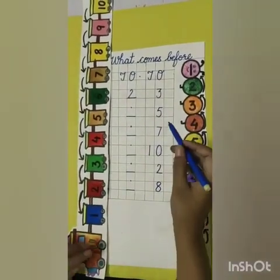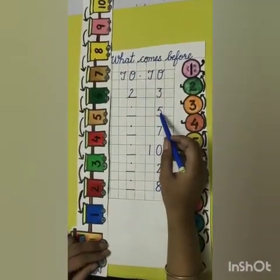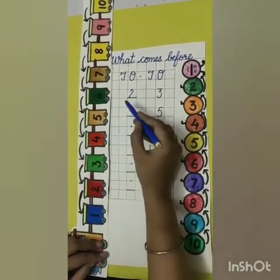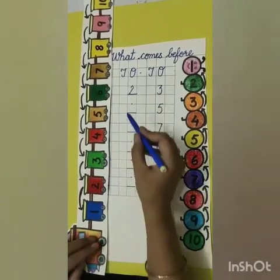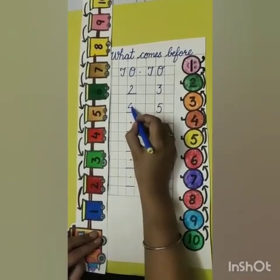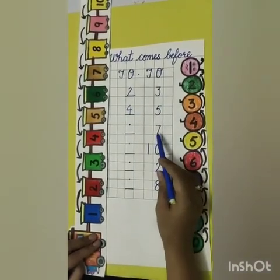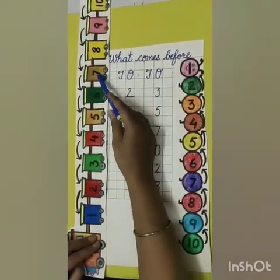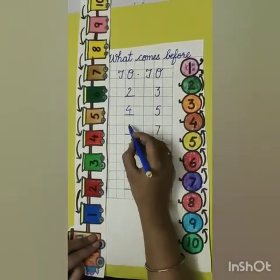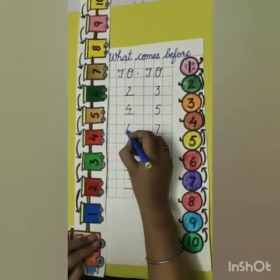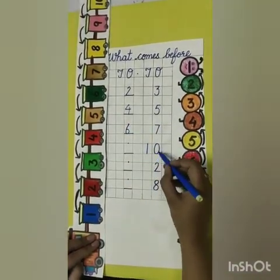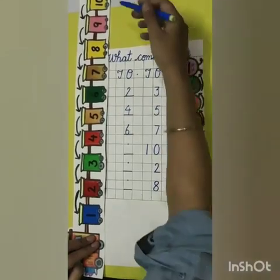So 2 comes before 3. Now let's move to our next number, that is 5. What comes before 5? 4. So we will write 4 under ones. So 4 comes before 5. Next number is 7. Tell me, what comes before 7? 6. So we will write 6 under ones. So 6 comes before 7.